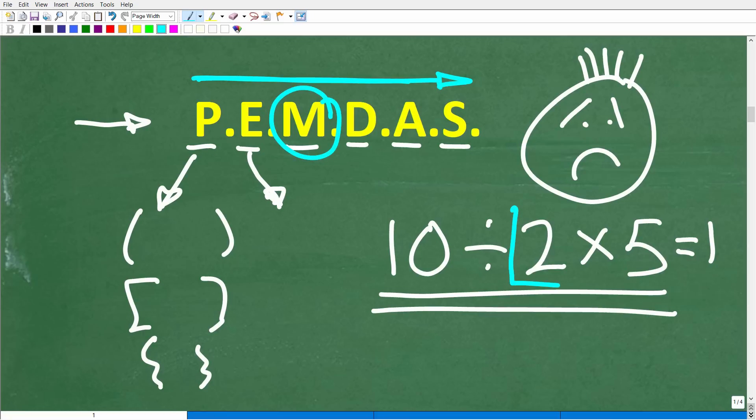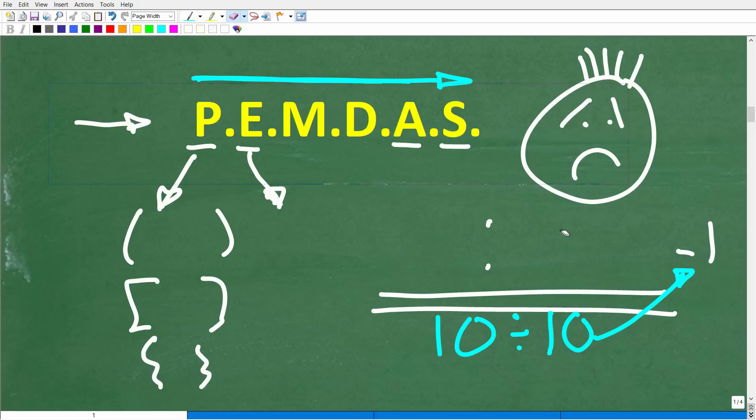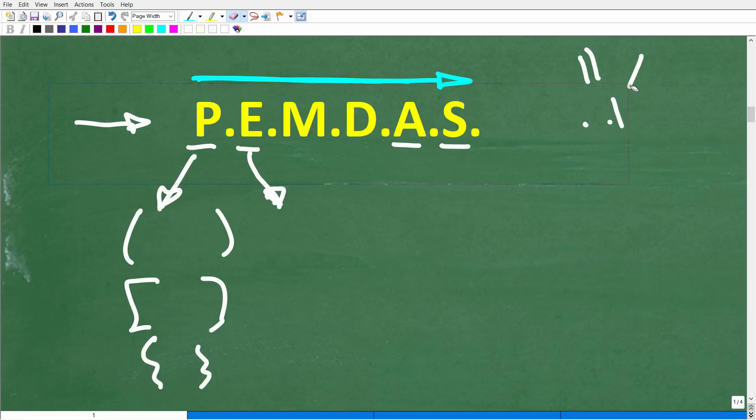So you would do 2 times 5, which, of course, is 10. So you have 10 divided by 10, which would be 1. Well, that's wrong. Now, why is that wrong? Well, this is a very common mistake, and for those of you that got 1 as your answer, I'm going to show you why right now.